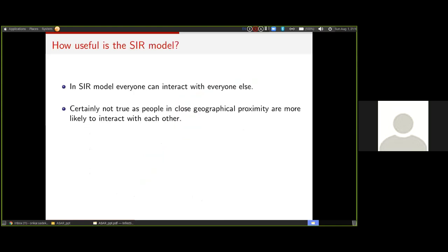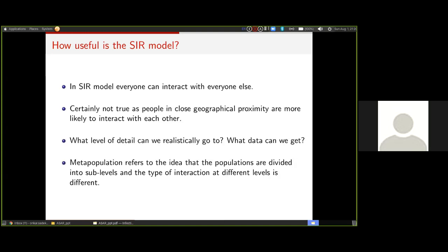However, the natural question that arises is how useful is this SIR model, because we assume that everyone can interact with everyone else. But that is certainly not true, as people in close geographical proximity are more likely to interact with each other. A person in Mumbai, if he's tested COVID positive, is more likely to infect another person from Mumbai rather than someone in Delhi. This model does not capture that aspect. It says that we have a country of one billion, everyone can interact with everyone else, and that is certainly not a very realistic depiction. The question we ask is what level of detail can we realistically go to based on how much data we can get.